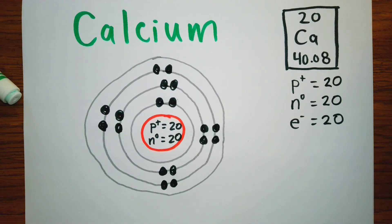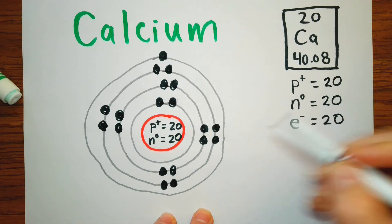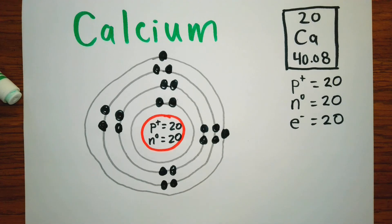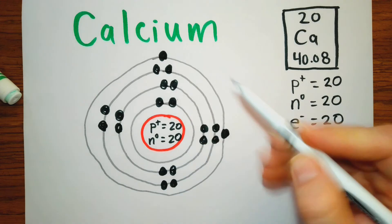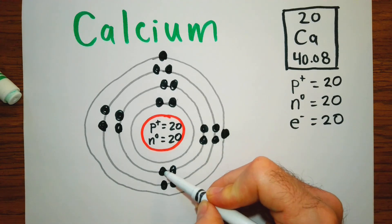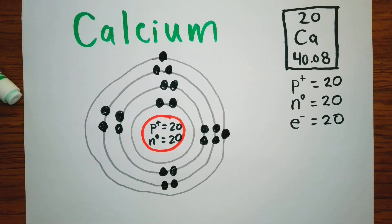For the fourth orbital, these two electrons are going to be unpaired, so we place them right here. Let's count to double-check — especially with twenty electrons we don't want to make a mistake: one through twenty. We have twenty electrons — this is the Bohr model for calcium. Thank you for watching; if you have any questions or comments put them in the comment section below, and until next time, keep on learning.